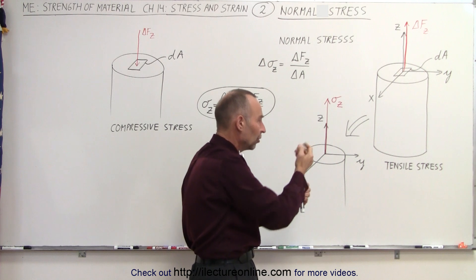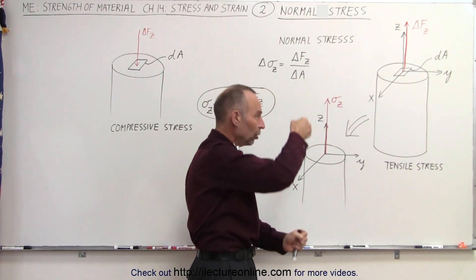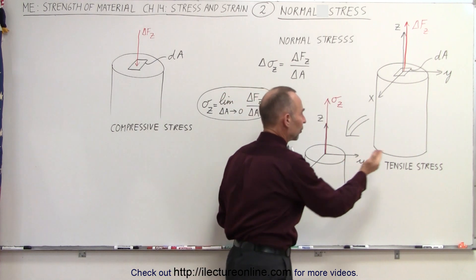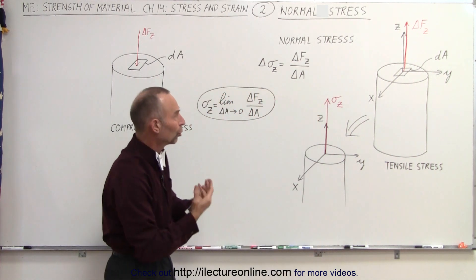Let's say there's a tensile stress. In other words, there's a force pulling up in one direction, a force pulling down in the other direction, pulling on that object and therefore creating a tensile stress. Then how do we define that normal stress?